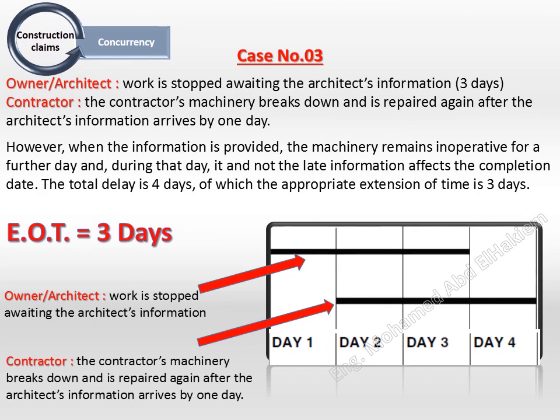Case number 6. Owner situation: work is stopped awaiting the architect's information, three days. Contractor situation: the contractor's machinery breaks down and is repaired again after the architect's information arrives by one day.